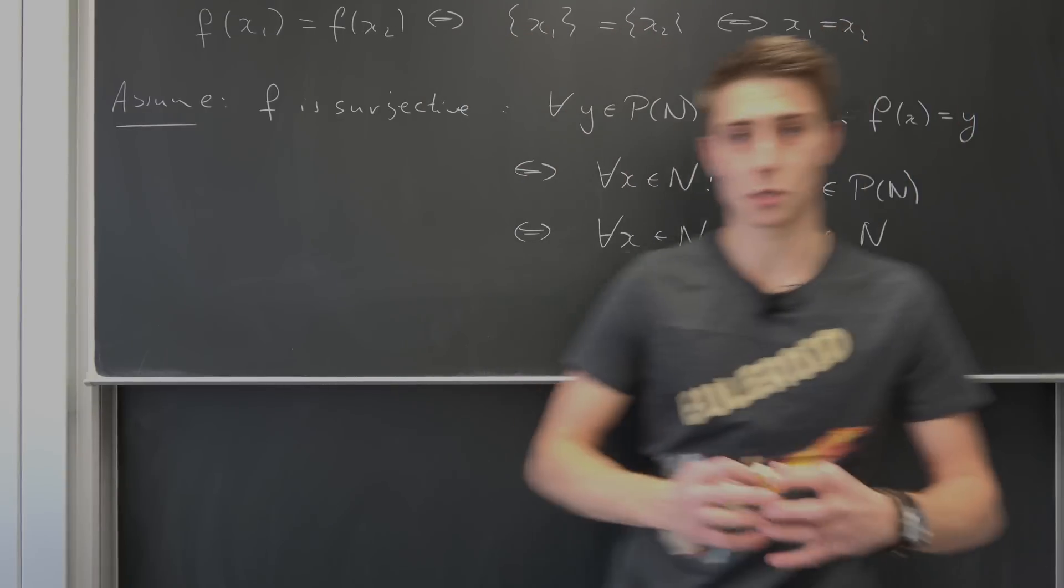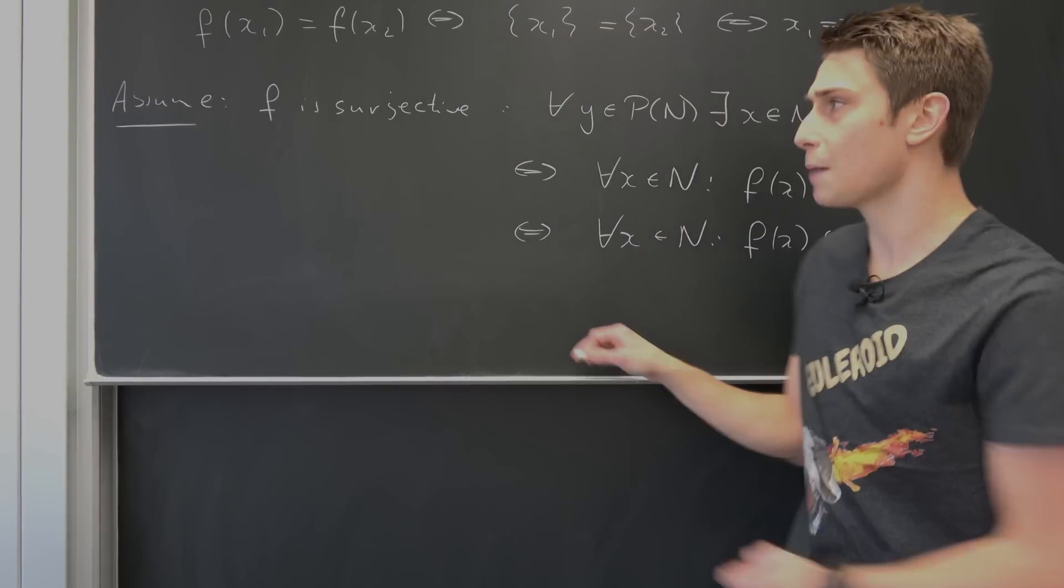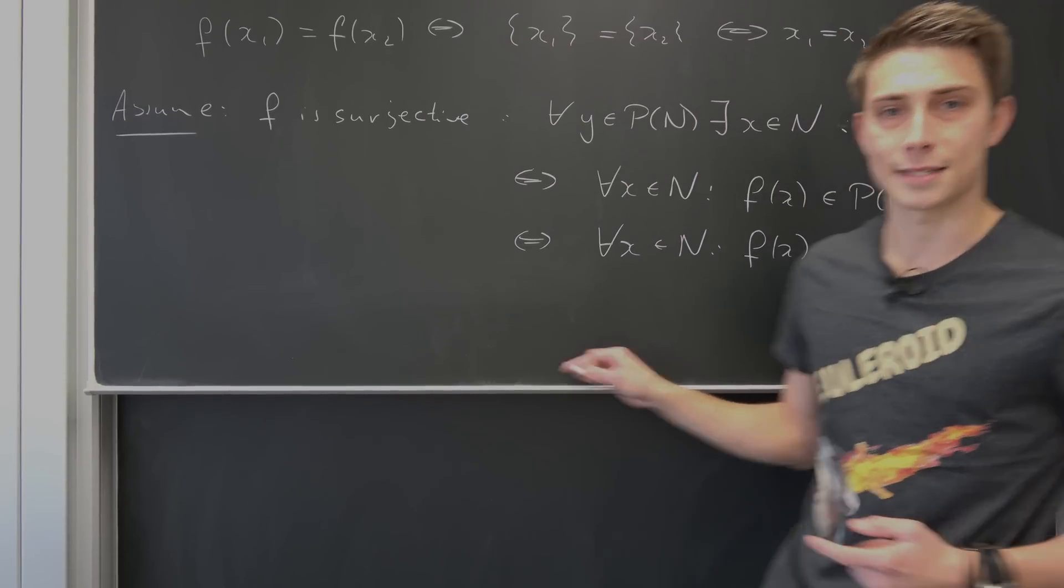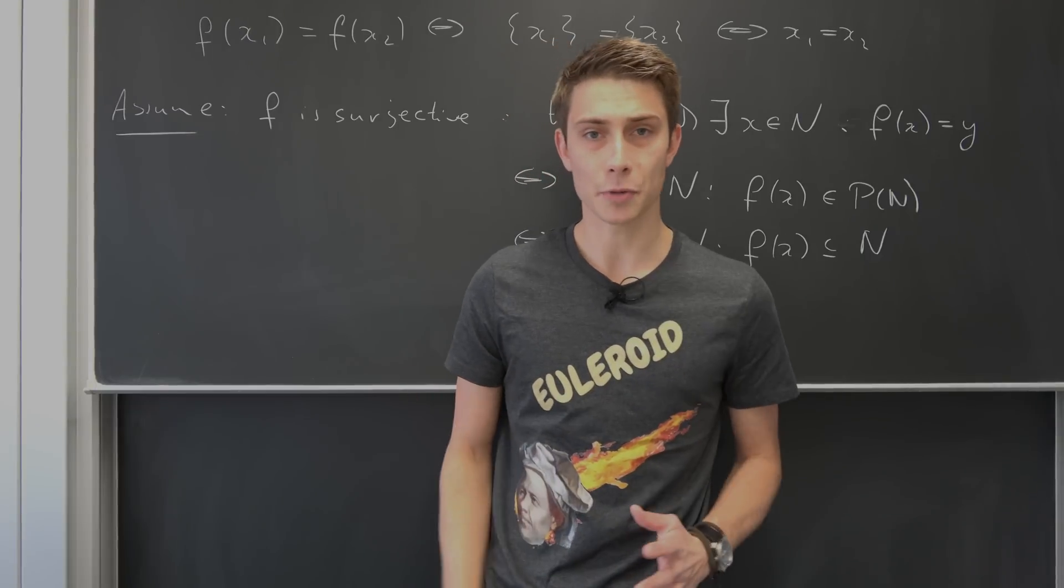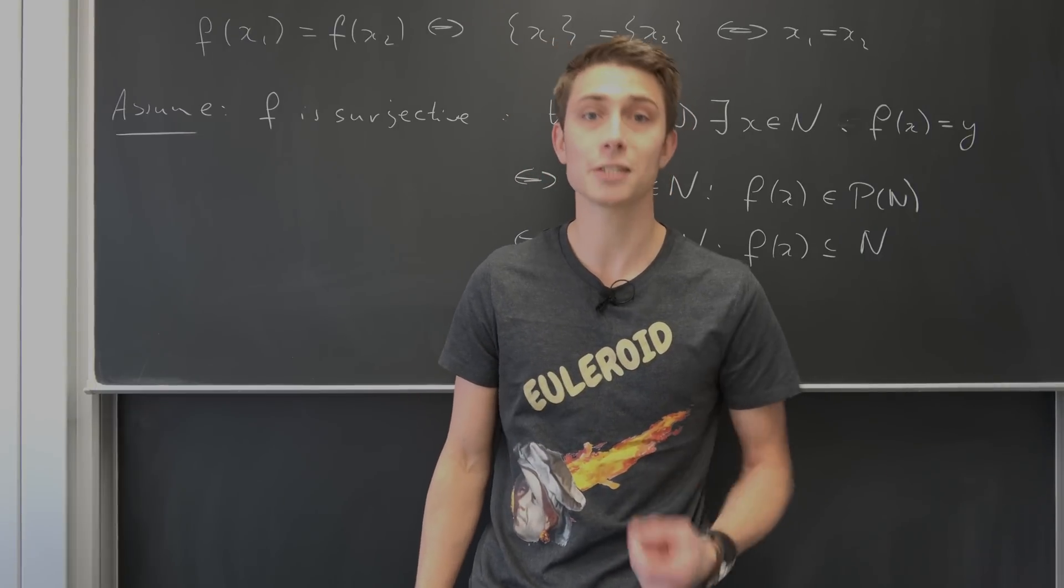And we want to disprove this statement. So what we want to do is construct ourselves a subset of our n such that this subset isn't in the image of f. So this is the plan and we are going to continue with the Cantor diagonal set.